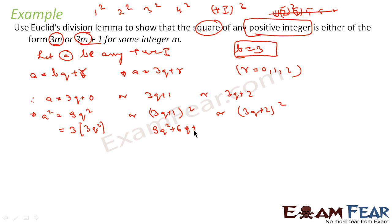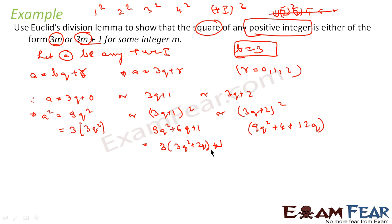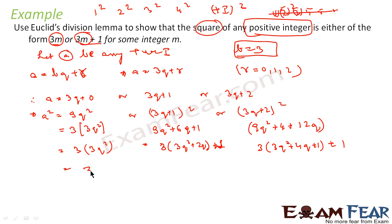Similarly, (3q+1)² expands to 9q² plus 6q plus 1, which I can write as 3(3q² + 2q) + 1. And (3q+2)² expands to 9q² plus 12q plus 4, which I can write as 3(3q² + 4q + 1) + 1. I am writing in these forms because the question says I have to express things as 3m or 3m plus 1.